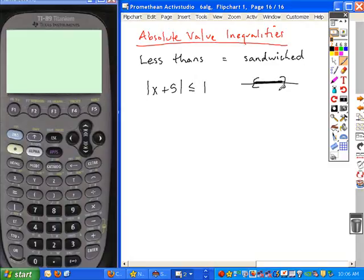When you solve these sandwich-type problems, these less-thans, what you're going to do is take the expression that they give you and you're going to sandwich it between what's given and the opposite of what's given. So you'll just take the opposite of one.